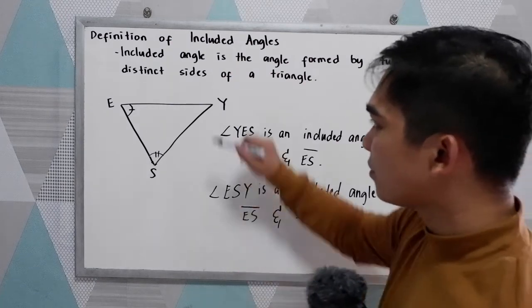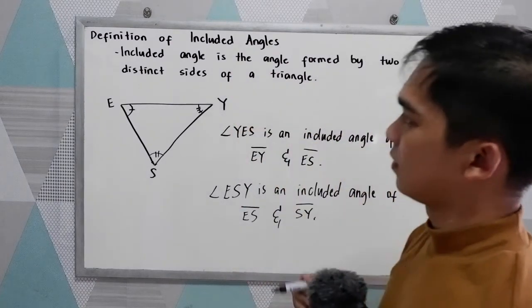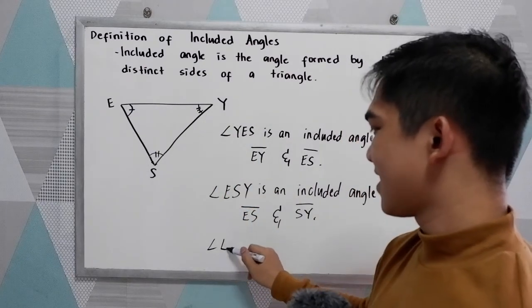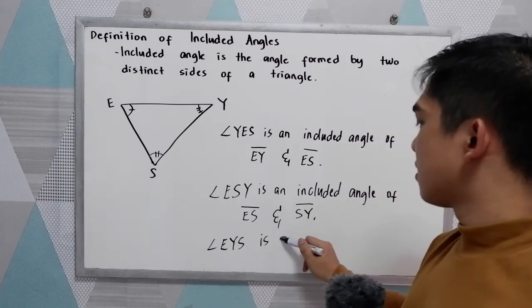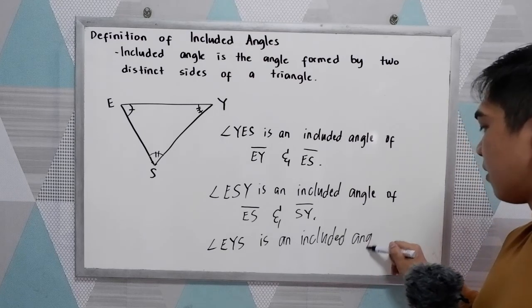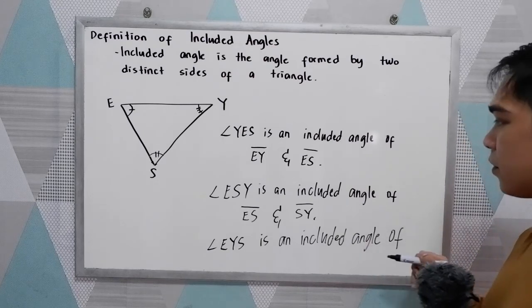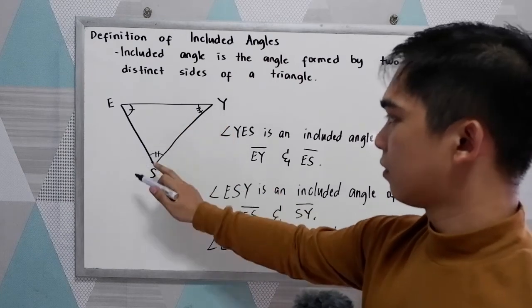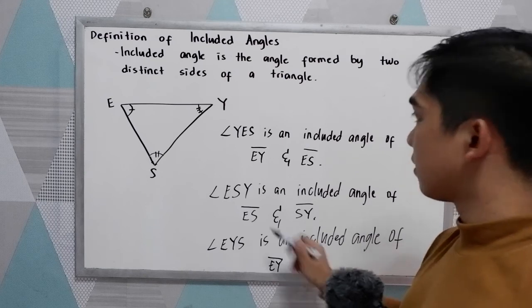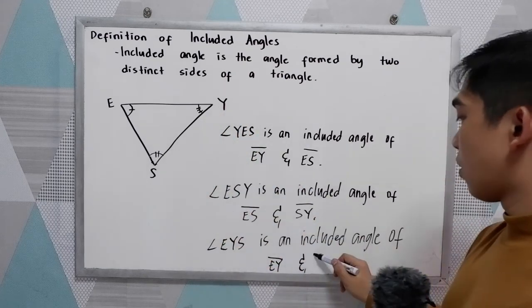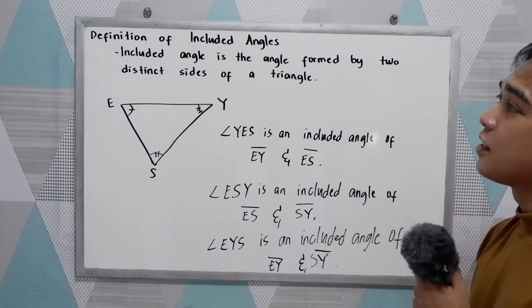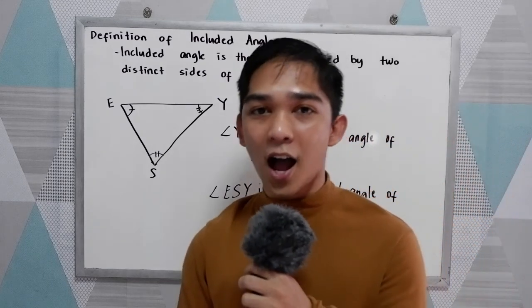We also have, last one, angle EYS. Angle EYS is an included angle of side EY and SY. So that is the definition of included angles.